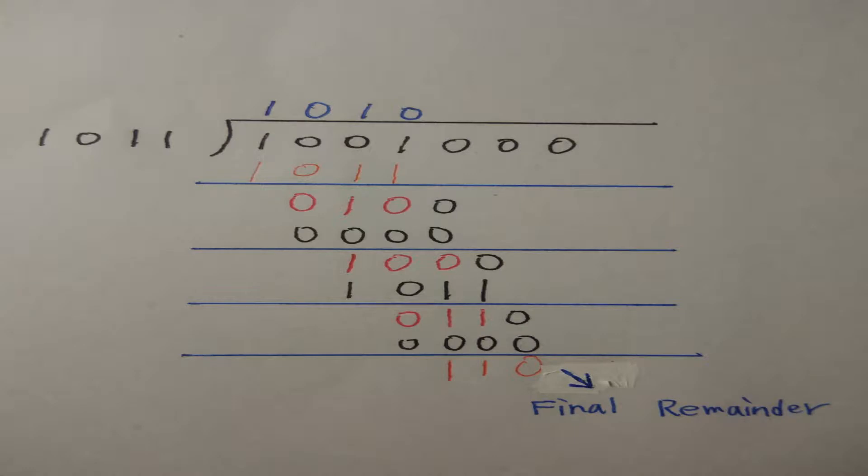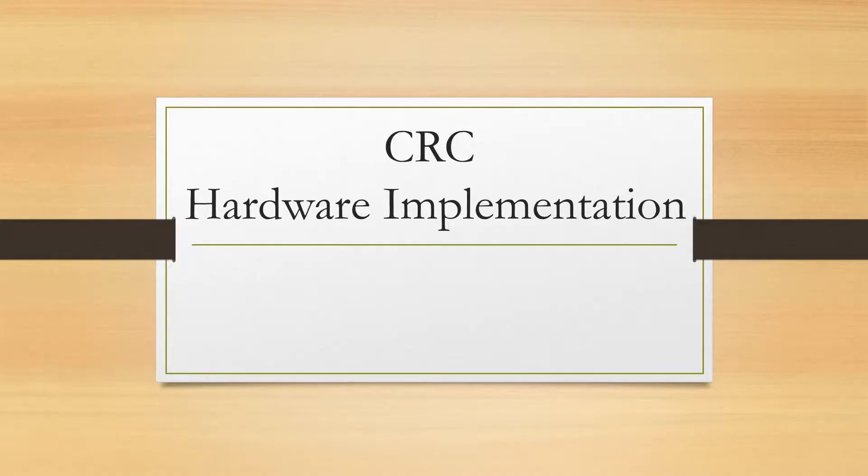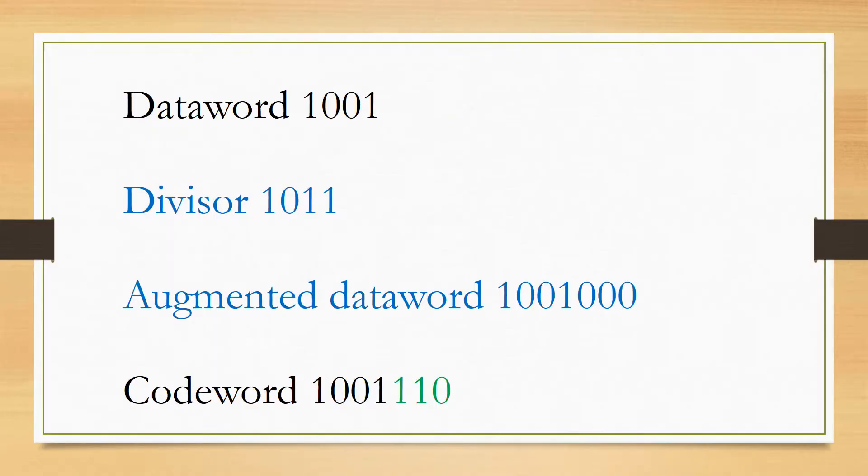Finally, we get remainder 110. Now let's talk about CRC hardware implementation. In this example, dataword is 100011, divisor is 1011, and the augmented dataword is 100011000.